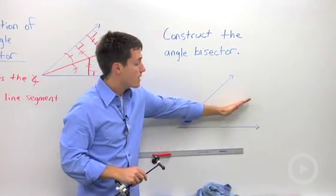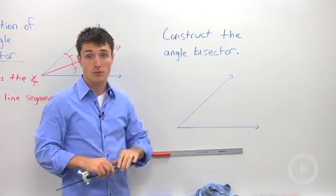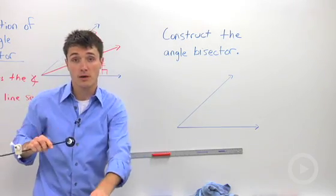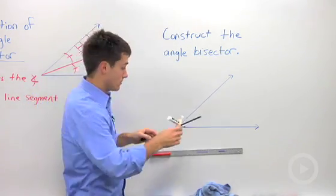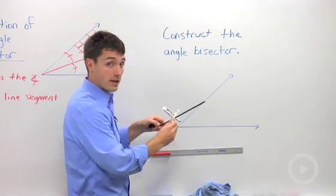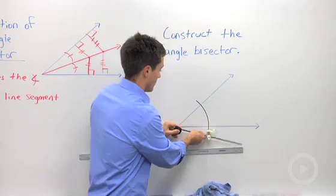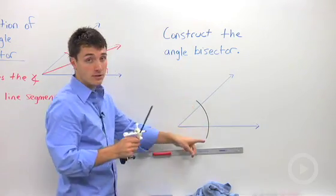So we know that we're going to create a ray that creates two congruent angles. So the first thing you're going to do is you're going to swing an arc, just like if you were duplicating an angle. So from the vertex I'm going to swing an arc so that I create two points of intersection.